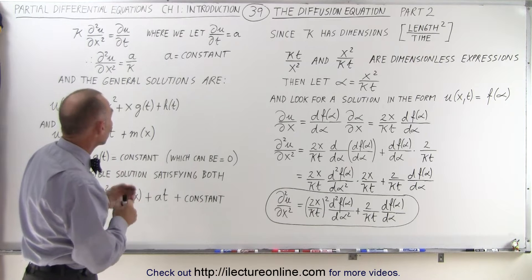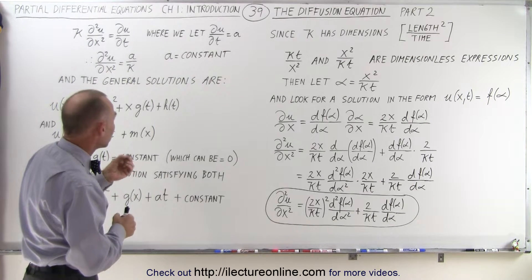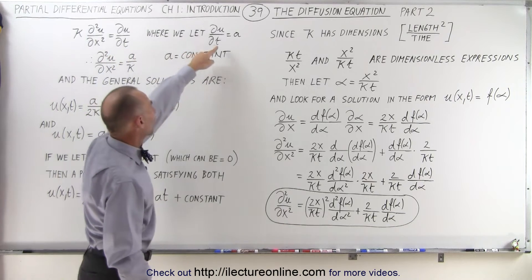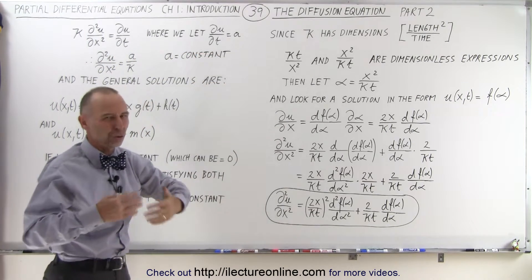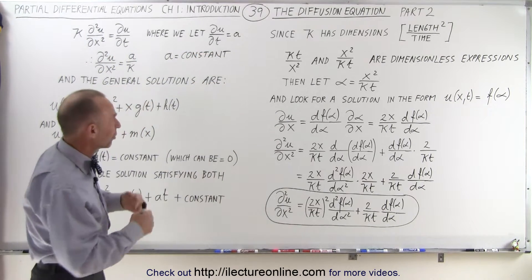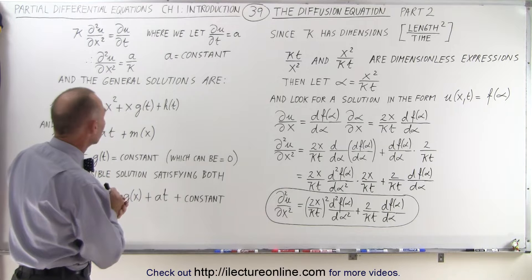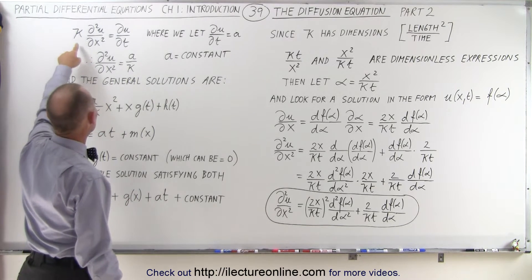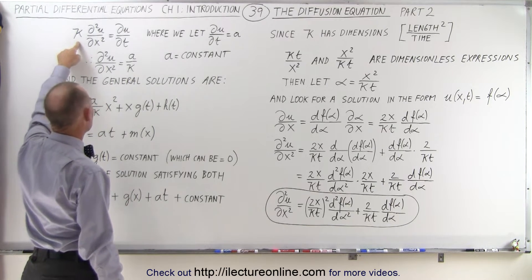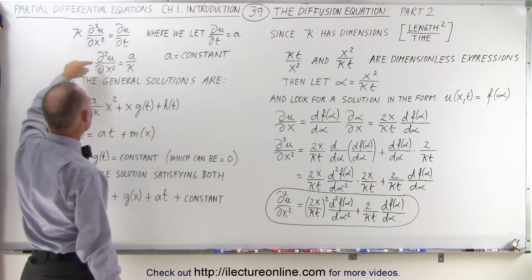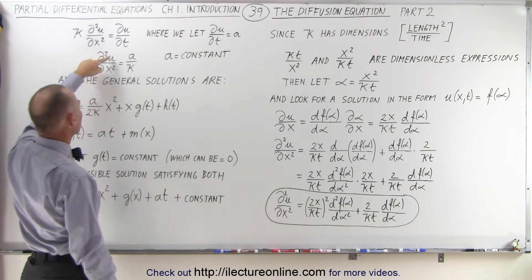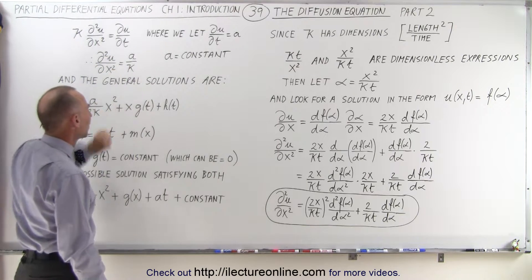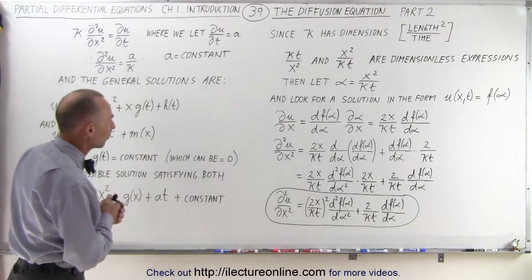We said that we could find a good approximation, an easy solution, by letting the right side equal a constant. So we let that equal a constant, a. When we divide both sides by k, the constant on the left side, we rewrite the equation as: the second partial derivative of u with respect to x is equal to a over k, which on the right side is simply a constant.